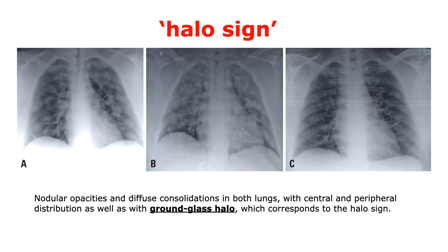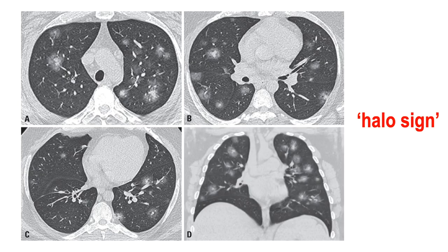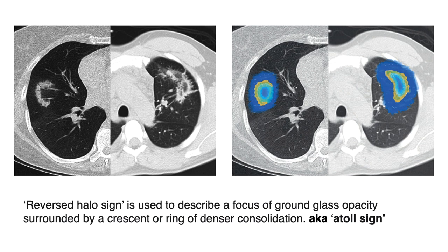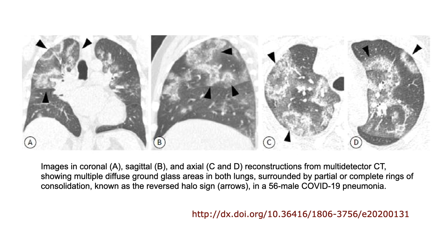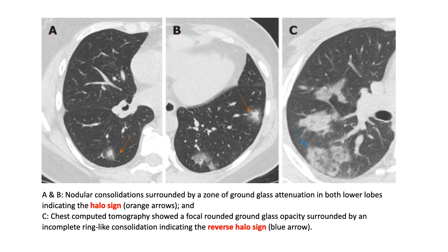Coming to halo sign and reverse halo sign. Nodular opacities and diffuse consolidations with central consolidation surrounded by a ground glass halo give a halo sign — seen in all four images as central dense white consolidation surrounded by ground glass opacities. The reversed halo sign — also known as atoll sign — is a focus of ground glass opacity surrounded by a crescent or ring of denser consolidation. Both signs can be seen: halo sign in yellow and reverse halo sign in blue.